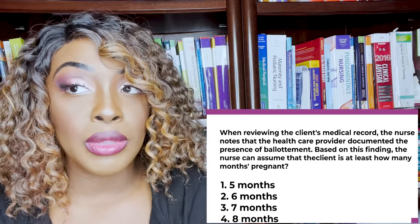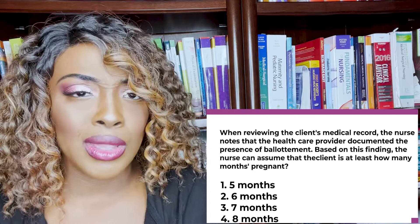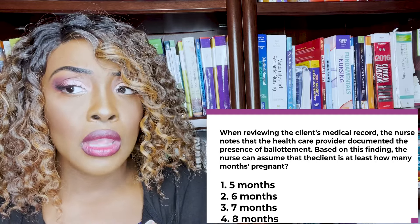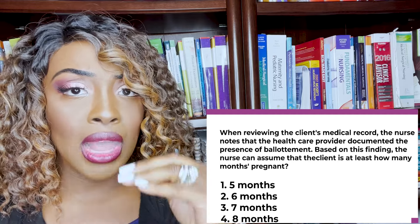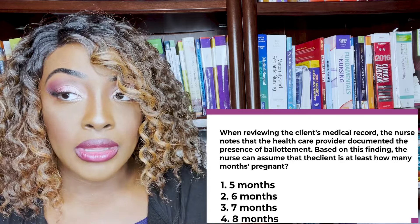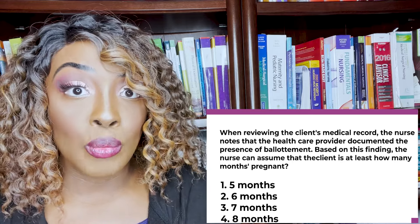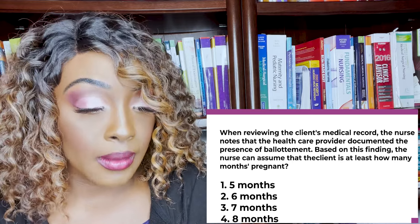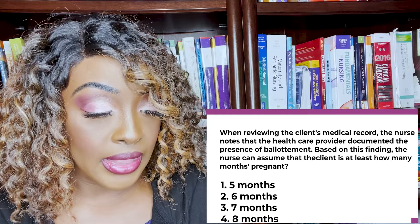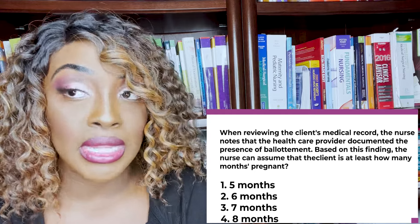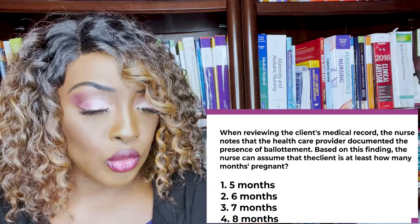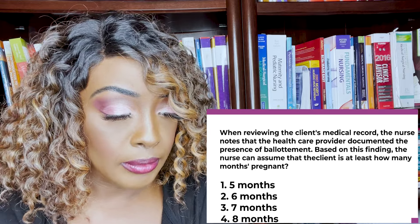Ballottement is when the fetus will elevate or bounce up once the lower portion of the uterus is palpated, and then it comes back down. We'll usually see this around the fourth or fifth month.